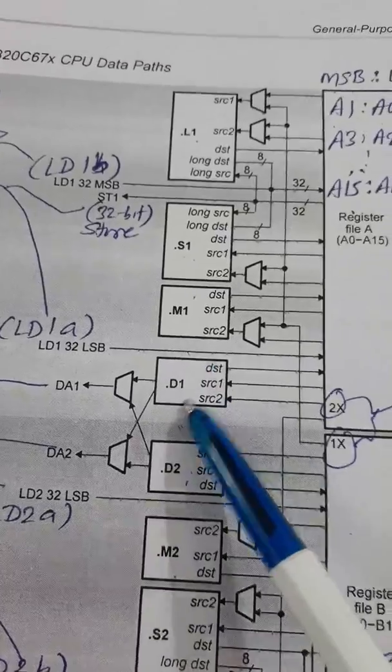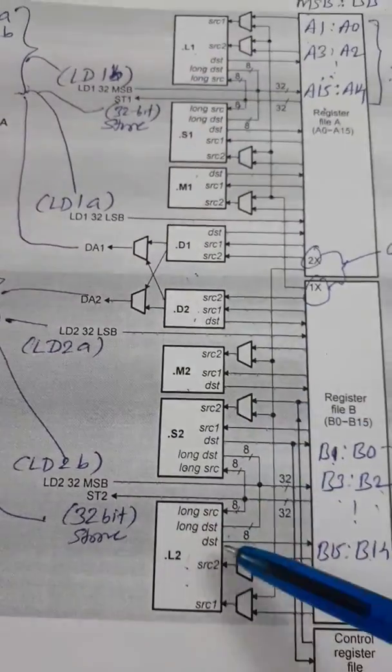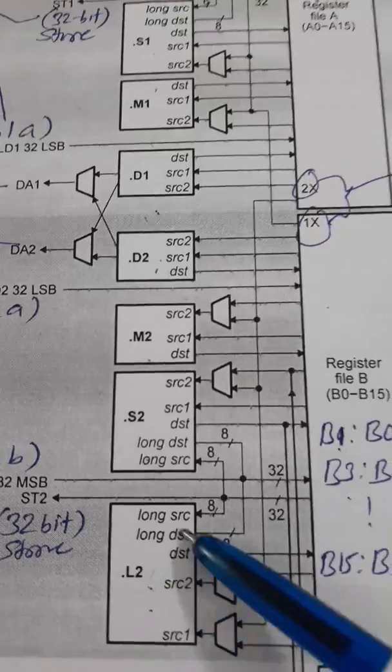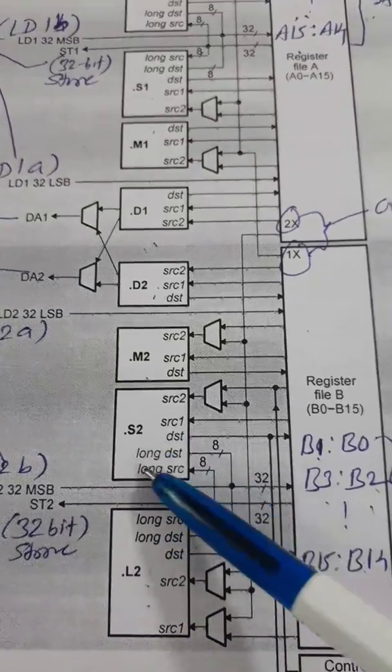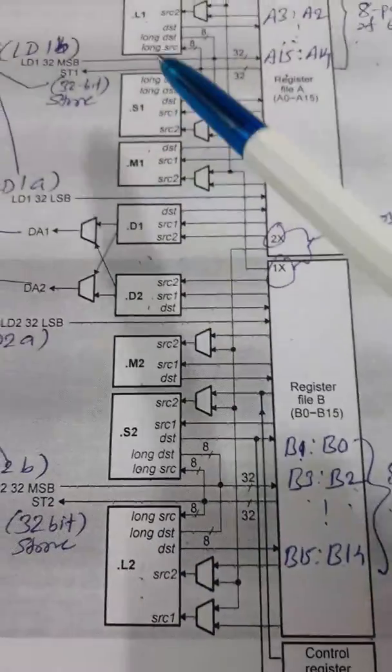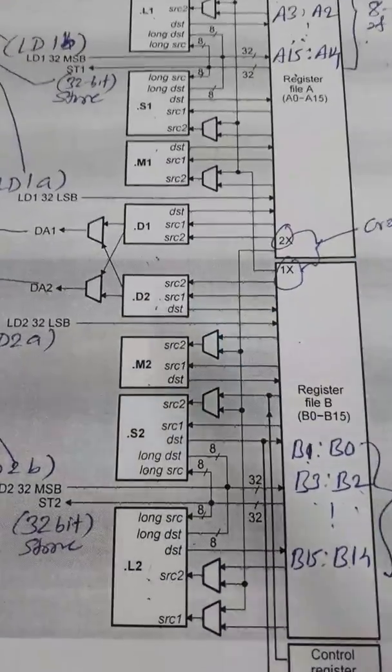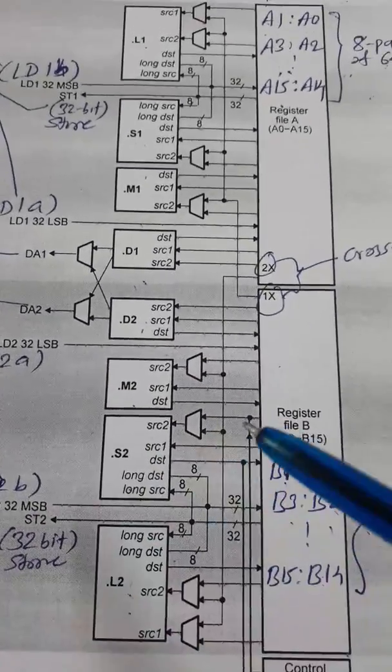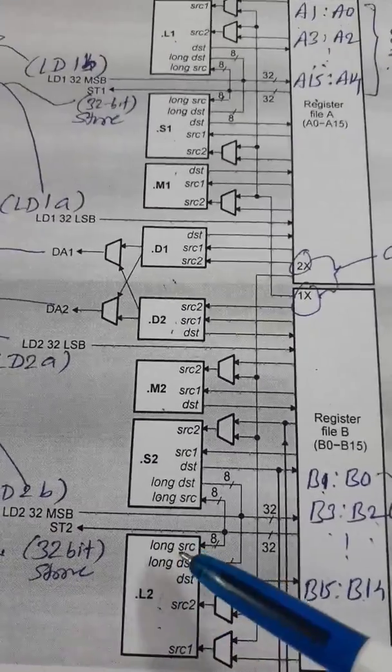Additional 8 bits can be taken as input in long SRC. And same way, additional 8 bits in 40 bit format, the additional 8 bit long output. But that provision is there in only two of the units, that is L1 and S1. M1 and D1, they don't have this provision. Same way, in lower path, only identical units. As I told you that this upper path and lower path are almost identical. So here, in the same manner, L2 and S2 have long SRC and long DST.